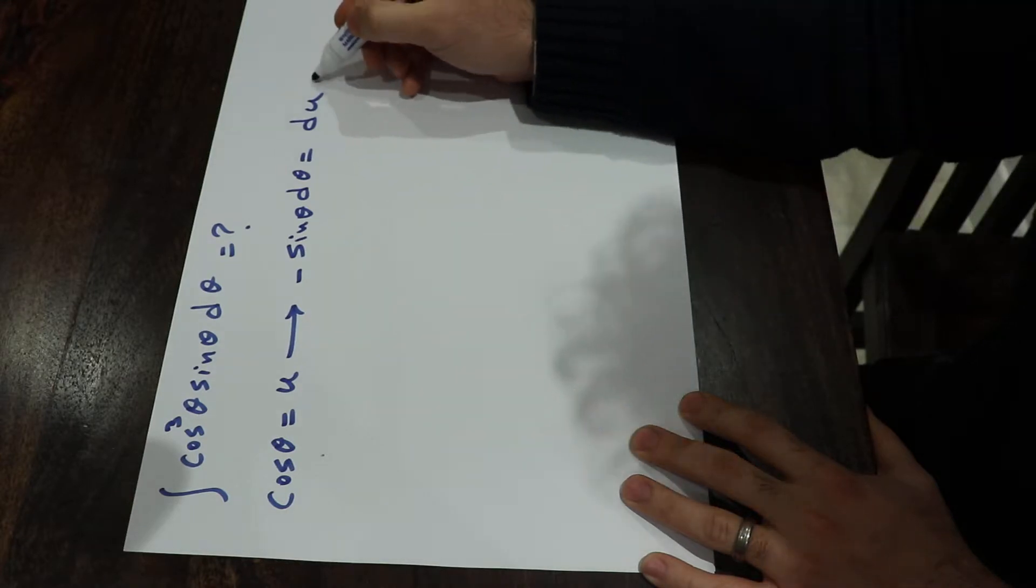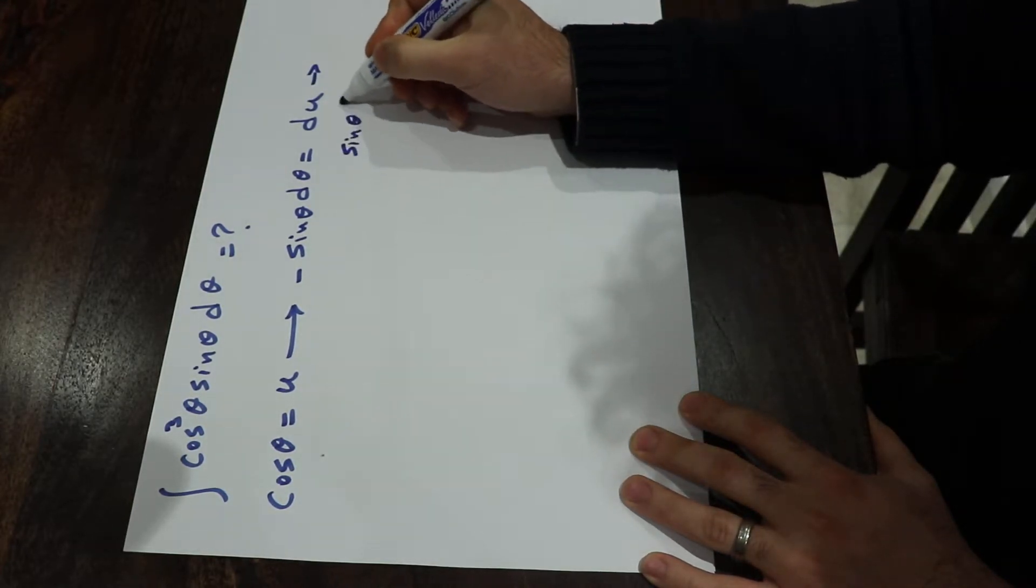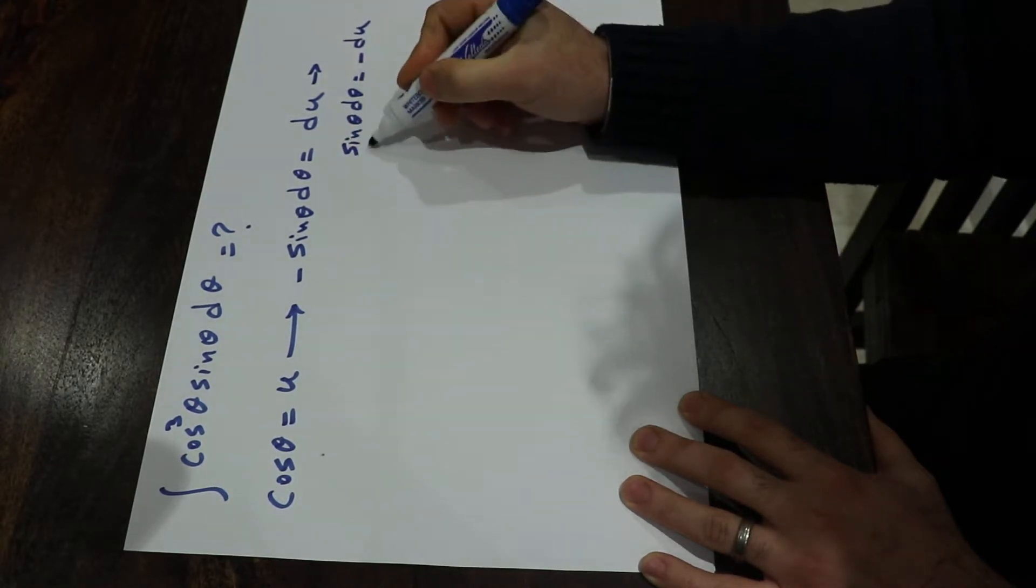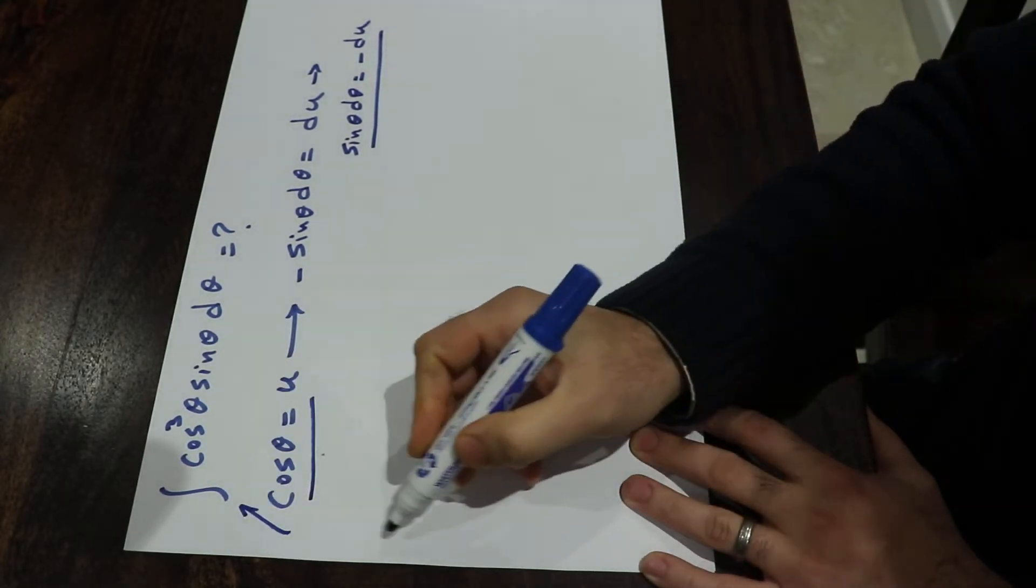So, in other words, sine theta d theta will be equal to minus du. So if you substitute this expression and this expression into the integral,